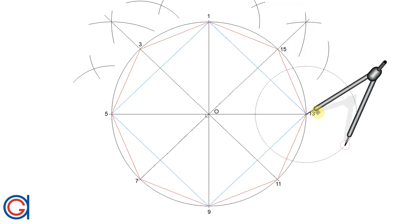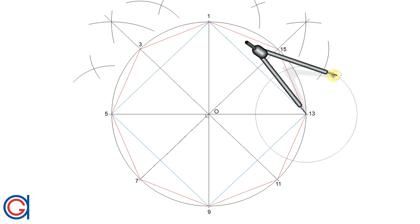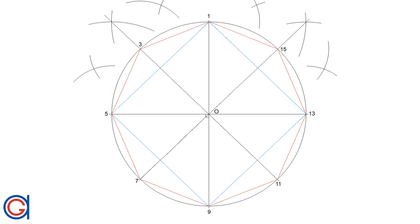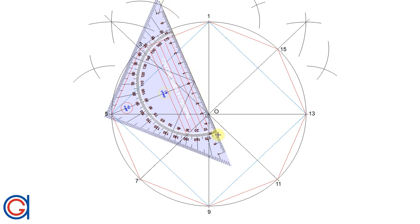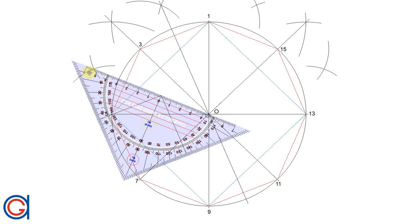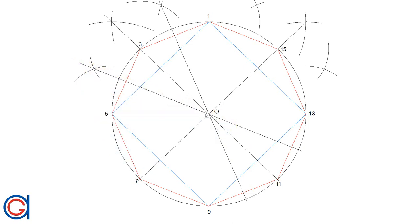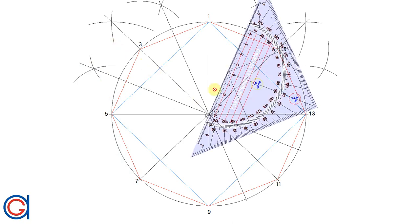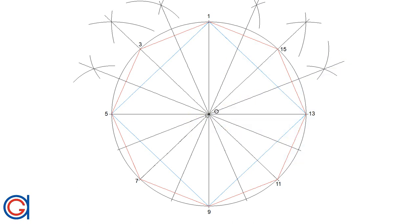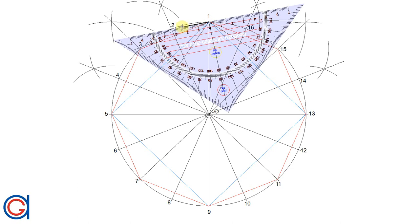We repeat this process with line segments 1 to 15 and 15 to 13. We then join the intersections of these arcs through the origin O and elongate them to get two more vertices on the circumference of the circle. We do this again with all four intersections, getting eight new points in total. Now we name these eight new vertices, so we have our 16 divisions of the circumference.